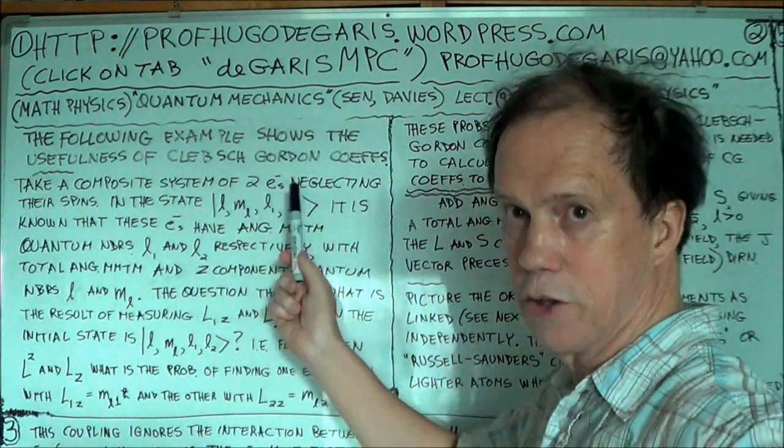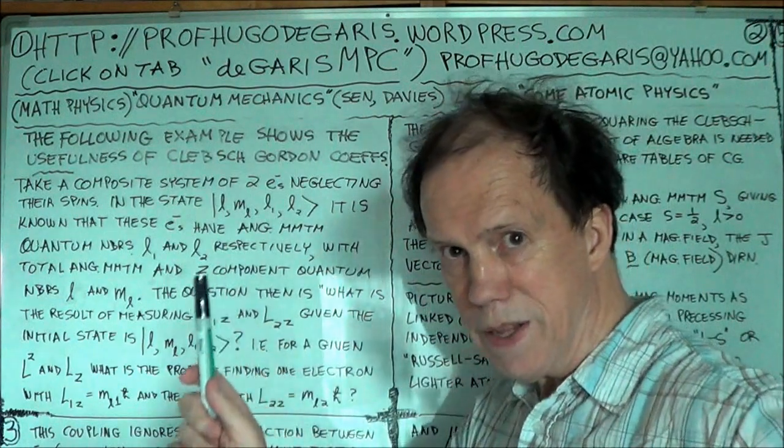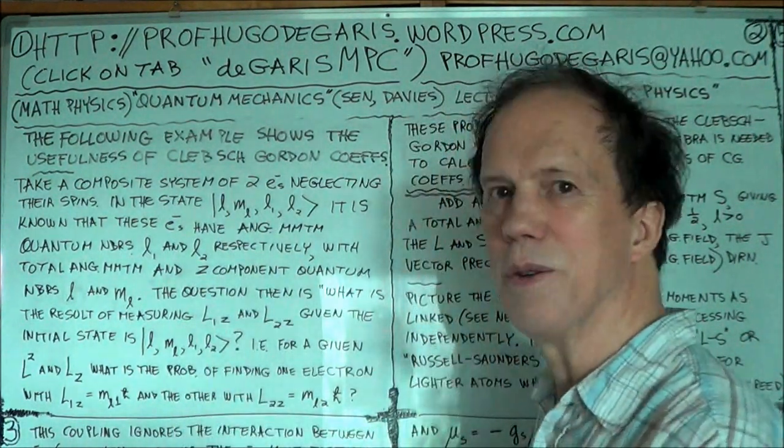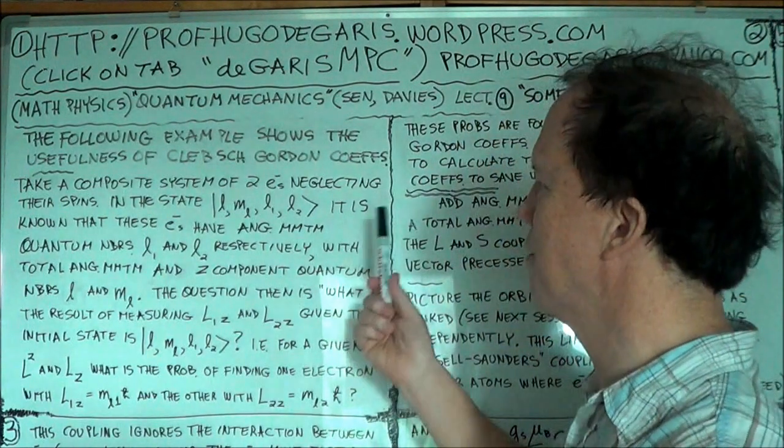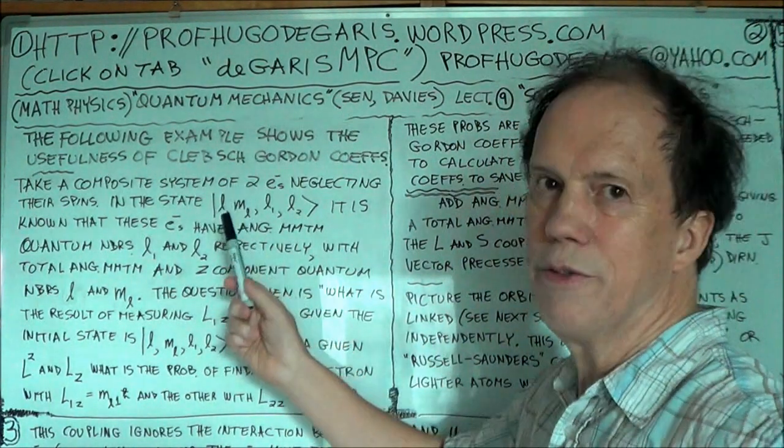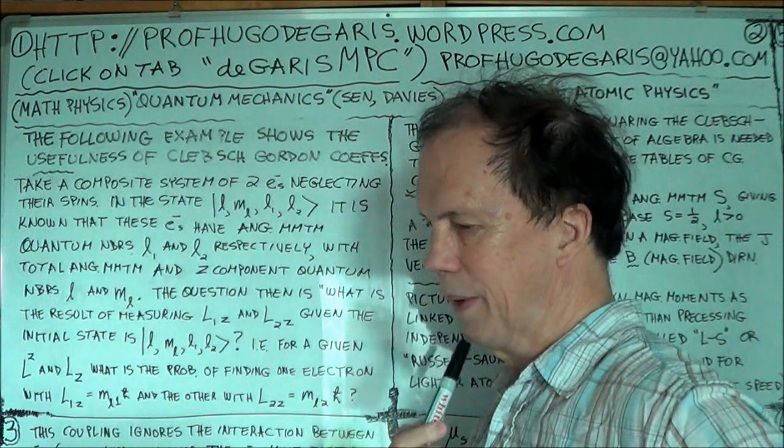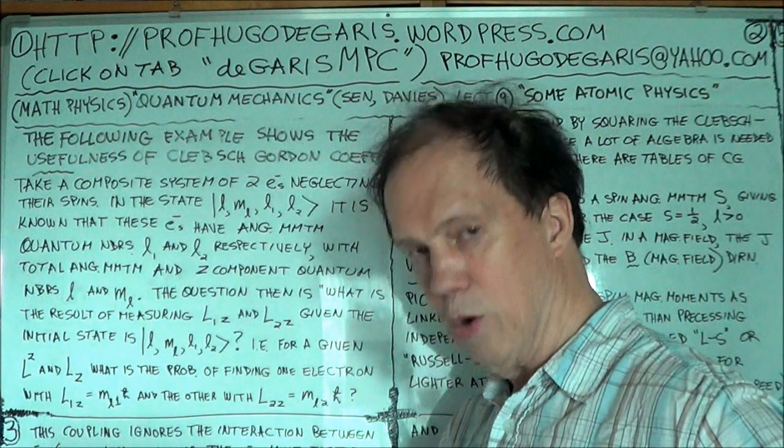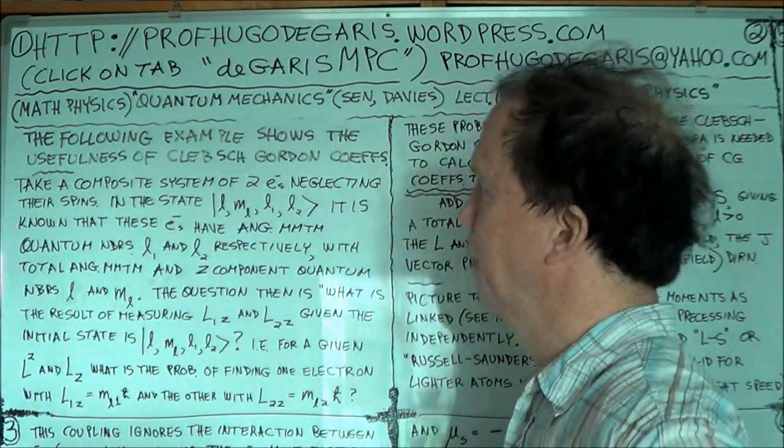So take the example of two electrons, you ignore spins, as though they have, you know, it's a model, right, so ignore the spins and say the spins is zero. There's no spins coming to it. So what you're left with then, in terms of angular momentum, because two electrons, is their orbital angular momentum.